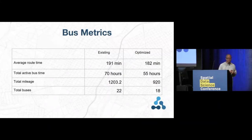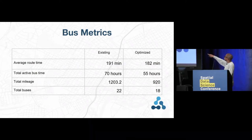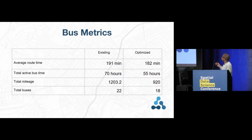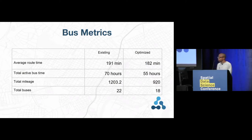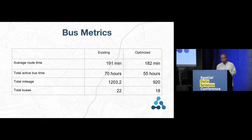Let me talk about the results we achieved for this particular exercise. The existing routes are shown on the left, optimized on the right. You see an average ride time of 191 minutes — we were able to reduce that to 182 minutes. Other outcomes: total bus active time down from 70 hours to 55 hours; total mileage down from 1,200 to about 900; and crucially, the total number of buses was reduced from 22 to 18.